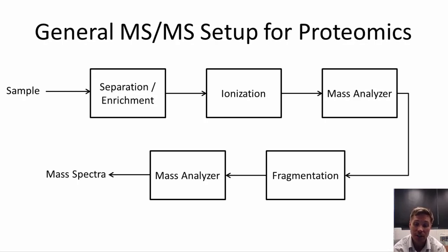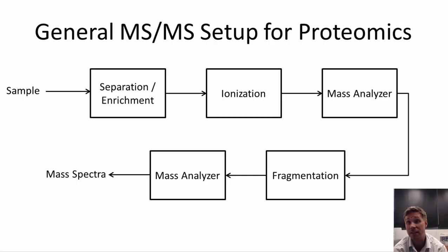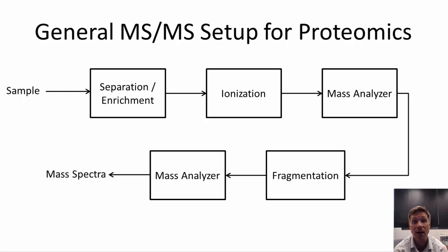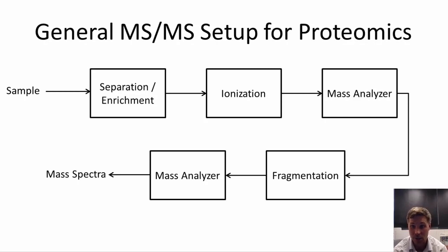Almost universally, proteins in a sample are digested to turn them into peptides. A common protease used to do that is trypsin, but there are other proteases which are sometimes used. This takes you from a usually highly complex mixture of proteins to a simpler mixture of peptides, which are then typically separated even further and input into the mass spectrometer via an ionization process.